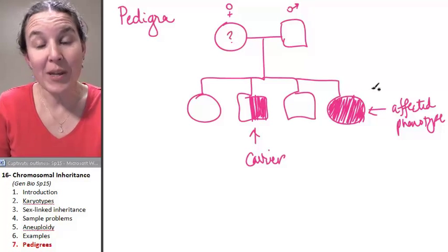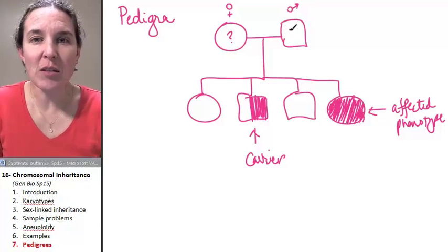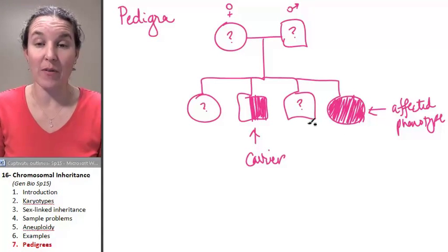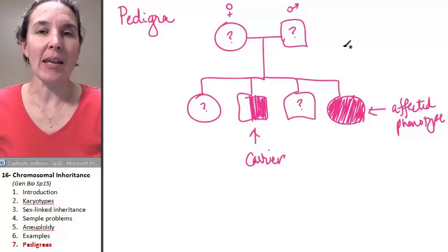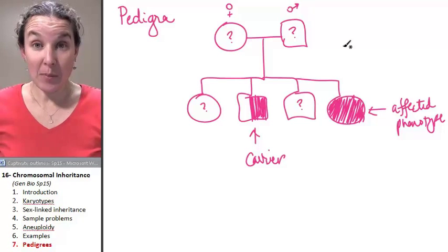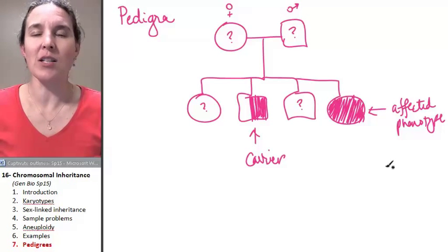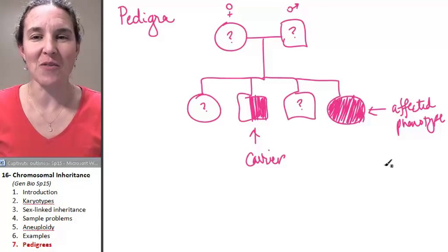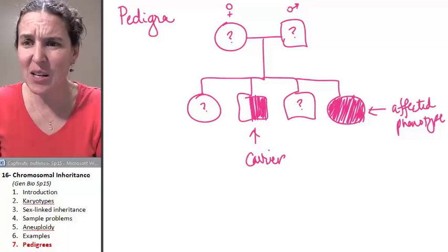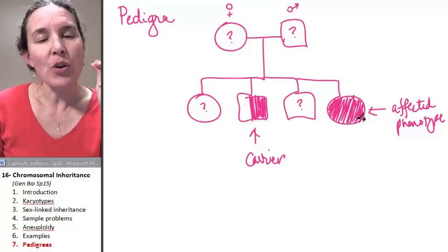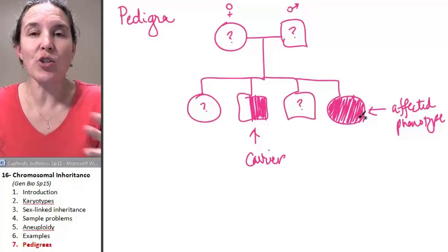Often you will be given a little bit of information, but your job will be to figure out what could be true about these people. And sometimes there's more than one answer to this little situation. I wonder, I just made this thing up, so I wonder if I can figure it out. Let's see what we can figure out from this particular pedigree. So first of all, you don't know unless you're told.